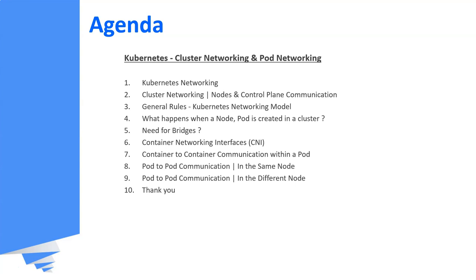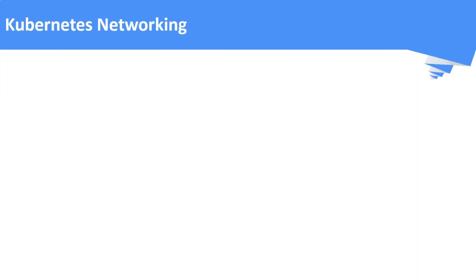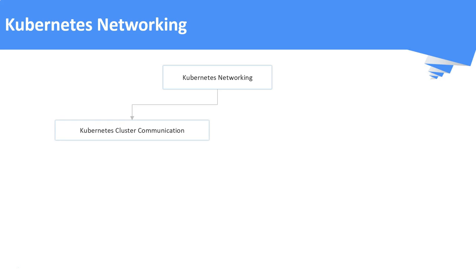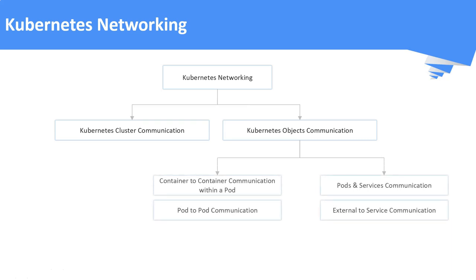This is the agenda of this video. We are going to discuss these topics. Kubernetes networking will be divided into two parts. First is the Kubernetes cluster communication — this section covers how the nodes and control plane communicate with each other, including both master and worker nodes. Second is Kubernetes objects like pods, services, and their communication — further classified into container-to-container communication in a pod, pod-to-pod communication, services-to-pod communication, and external-to-service communication.